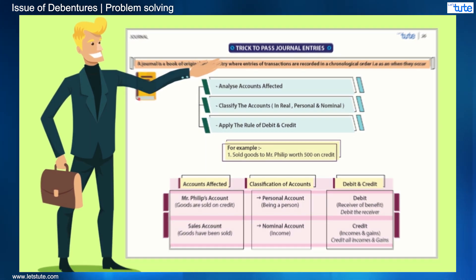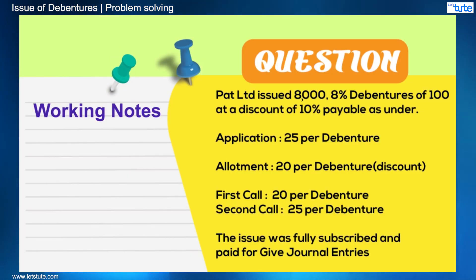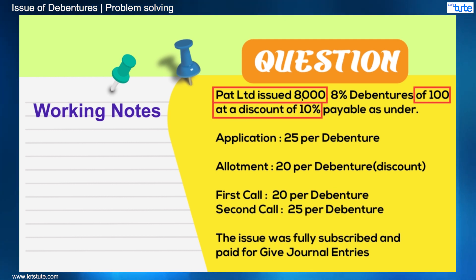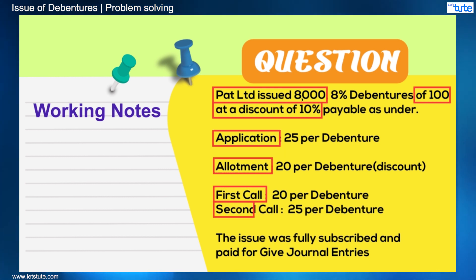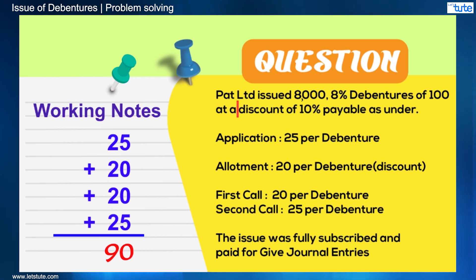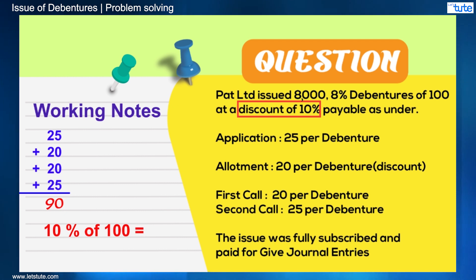So we should always follow these tips. Here is the question. As you can see in the question, there are 8,000 debentures that were issued and the face value is 100. These debentures were issued at a discount of 10%. They were collected in the form of application, allotment, first call, and second call. The amount when added up is equal to 90, showing that the discount is 10. Also, 10% of 100 is 10.